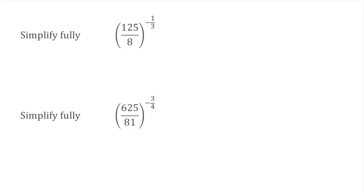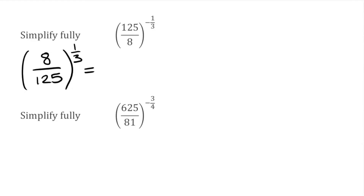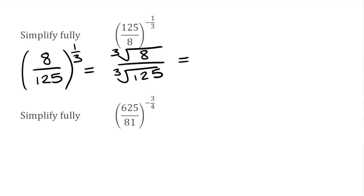For the first question, we've got 125 over 8 to the power of negative 1 third. Negative index means we're looking for the reciprocal — because I've got a fraction, I'm going to flip it. So this is the same as writing 8 over 125 to the power of positive 1 third. Because we've got a 3 on the bottom, we know we're looking for the cube root. This is the same as the cube root of 8 over the cube root of 125. Simplifying, the cube root of 8 is 2, over the cube root of 125, which is 5. So that one would be 2 over 5.